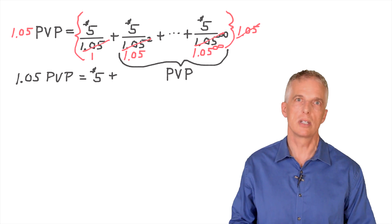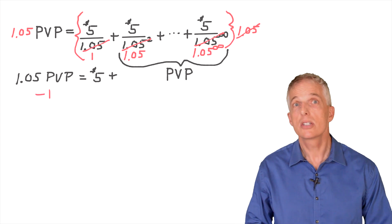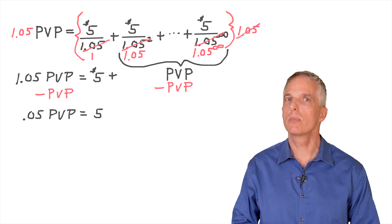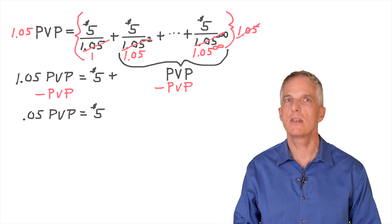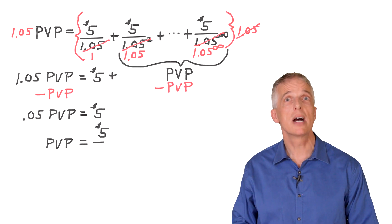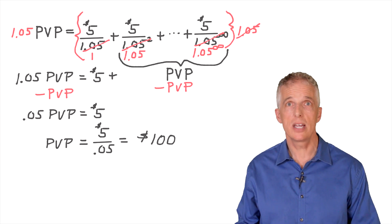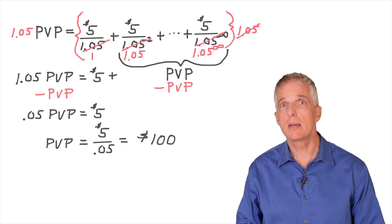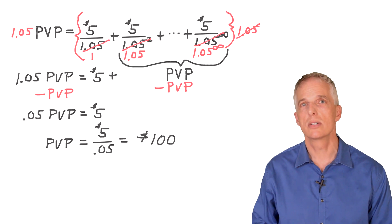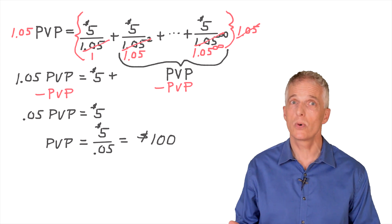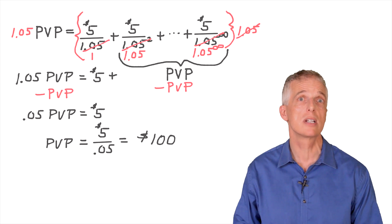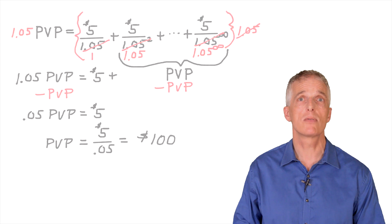Next, subtract PVP from both sides. After doing so, we are left with 0.05 times PVP, which equals $5. Divide both sides by the interest rate, or 5%. This leaves you with a $5 annual payment divided by the interest rate of 5%, which is $100. As we discussed before, the valuation of this perpetuity makes sense because an investment of $100 today will generate a $5 payment forever.